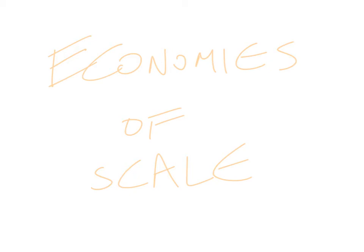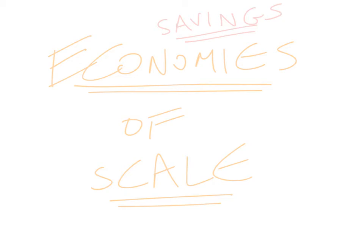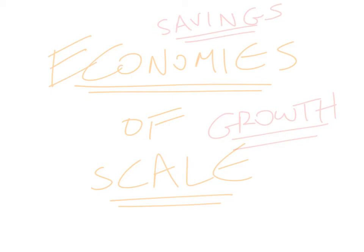It also helps to understand the meaning of the actual terminology. 'Economies' is really another word for savings, and 'scale' is another word for growing bigger or larger. So economies of scale means savings that the firm experiences as a result of growth in its size. Diseconomies, on the other hand, is the opposite — these are unsavings due to continuing to grow in size. Economies of scale basically looks at the savings the firm experiences as a result of growth in its level of inputs and outputs in the long run.